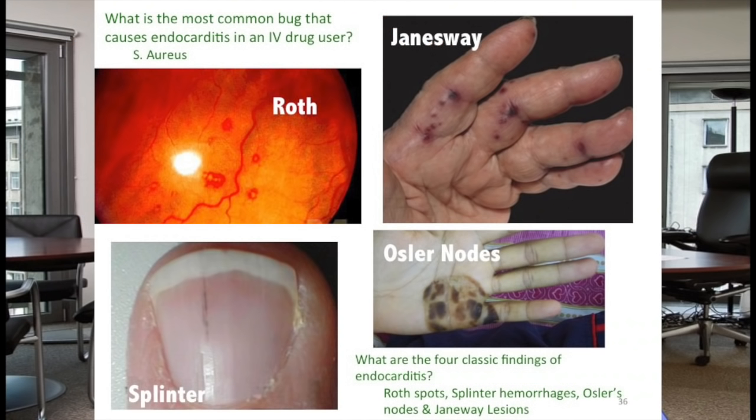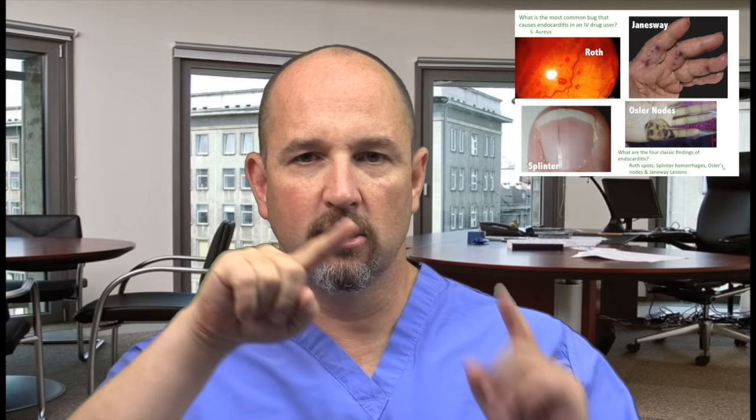The most common bug causing endocarditis in IV drug users is Staph aureus. The four classic findings of endocarditis: Roth spots (retinal hemorrhages), splinter hemorrhages, Osler's nodes, and Janeway lesions. Think of it as: why did O.J. Simpson get off? The glove — O.J. stands for Osler's nodes and Janeway's lesions. So look for Roth spots, splinter hemorrhages, Osler's nodes, and Janeway's lesions.